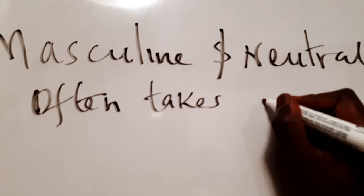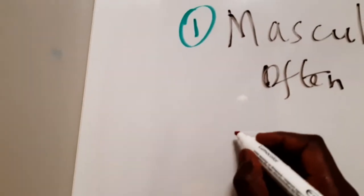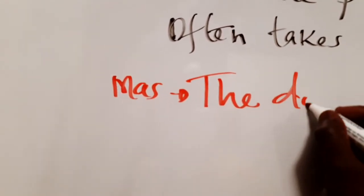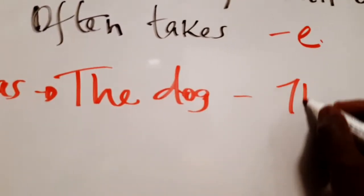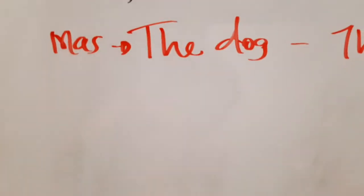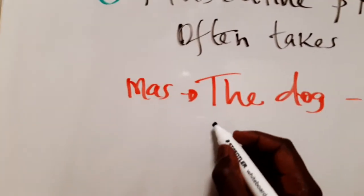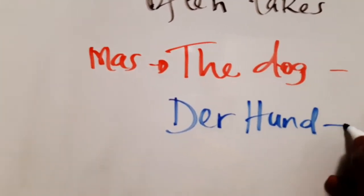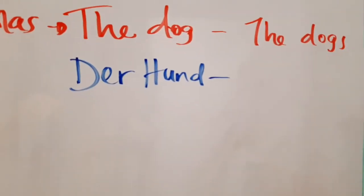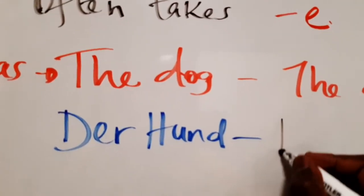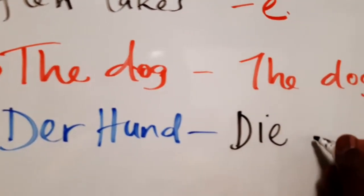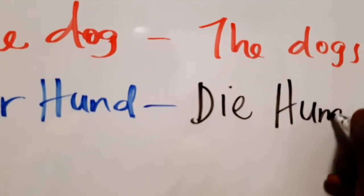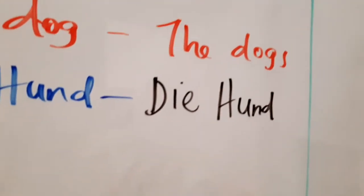For example, the first example is masculine: that is the dog. In plural, the dogs. In German it will be der Hund, and in plural it will be die Hunde, so we have to add the -e.